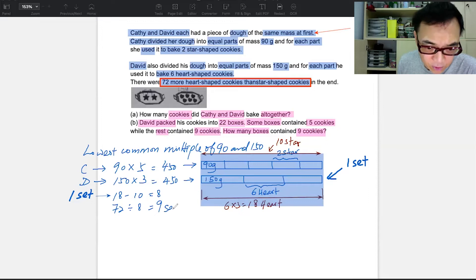So if this is one set, then I am going to work on one set first. So for one set, we have 18 minus 10 will give you a difference of 8, but you should get 72. So 72 divided by 8 will give you 9 sets.